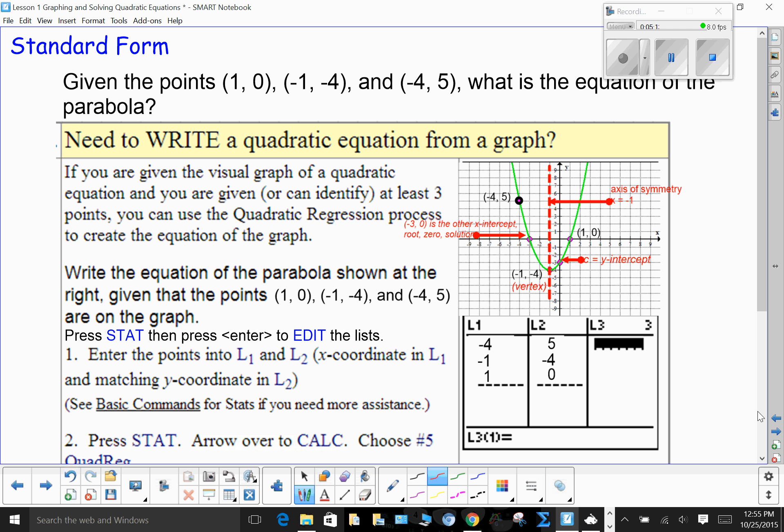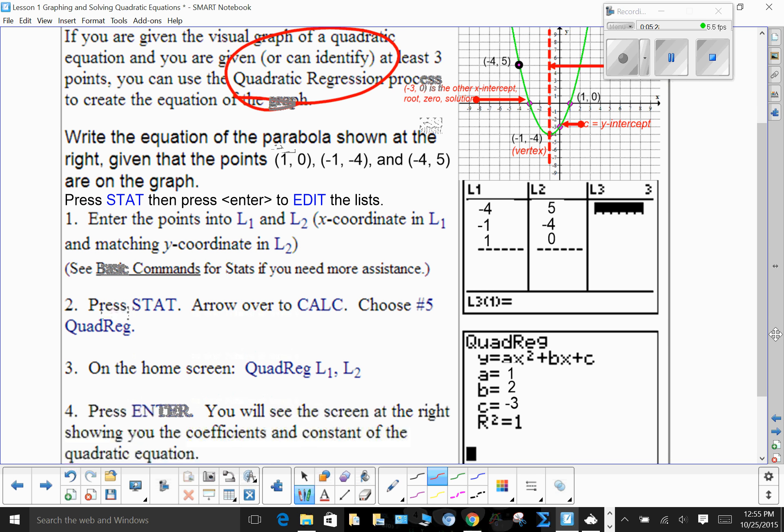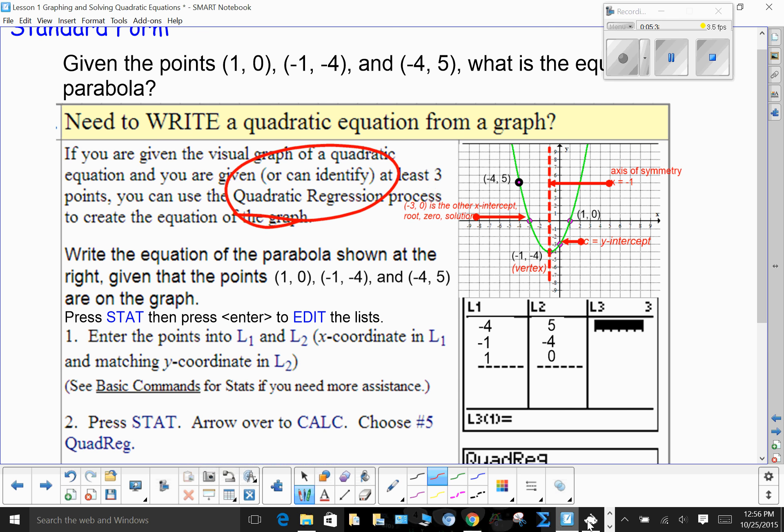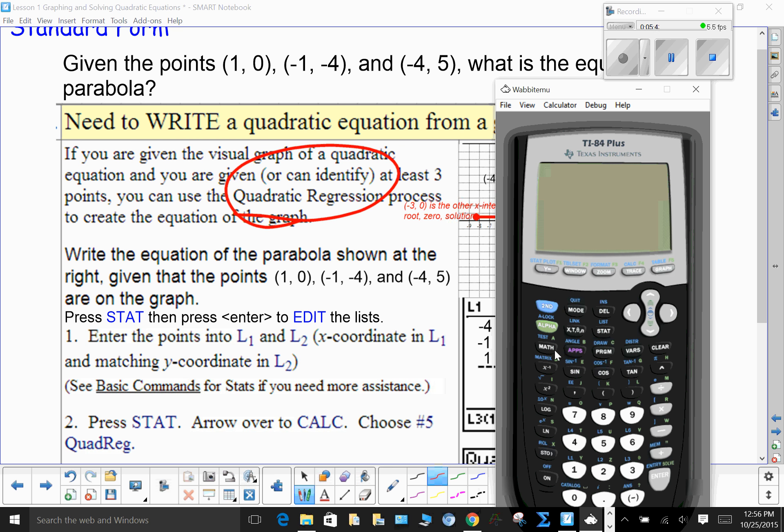The easiest way is to use what we call quadratic regression. Okay, quadratic regression. You're going to use the calculator. I will do this. You can pause, screenshot, screen print, look at this, and then you can move on. I'm going to actually do this with you, with the calculator right here. So, again, we have to turn the calculator on, and we're going to quit out of our previous graphing.